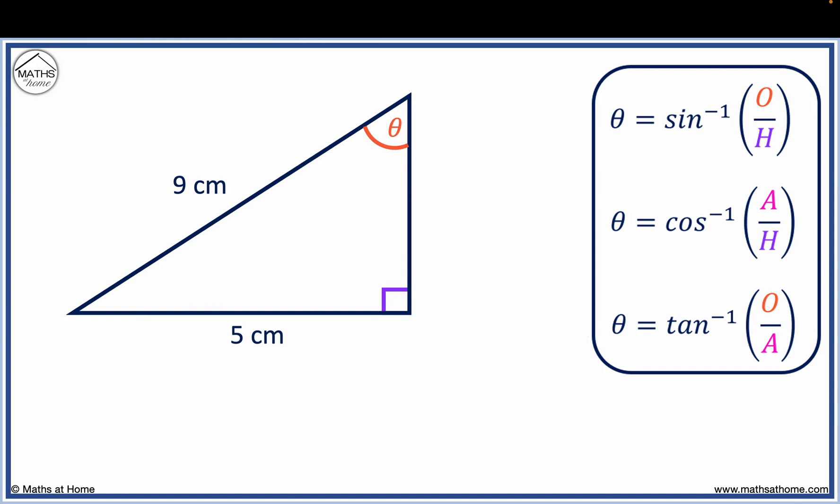Here is another example. Notice that theta is now at the top of the triangle, as this is the angle we require. The 9 centimeter side is opposite to the right angle, and so it is the hypotenuse, marked with an H.